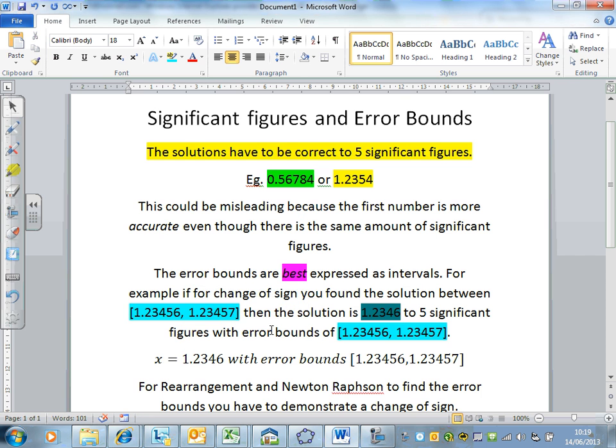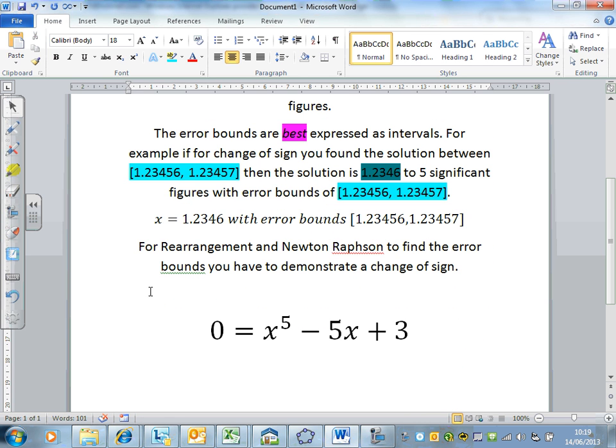That's fine with the change of sign because it gives us the error bounds automatically. For rearrangement and Newton-Raphson, to find the error bounds we have to demonstrate a change of sign. What I'm going to show you now applies to both the rearrangement and Newton-Raphson methods.